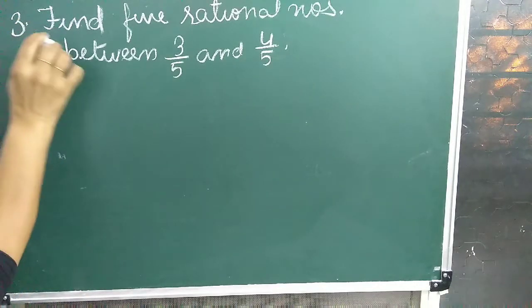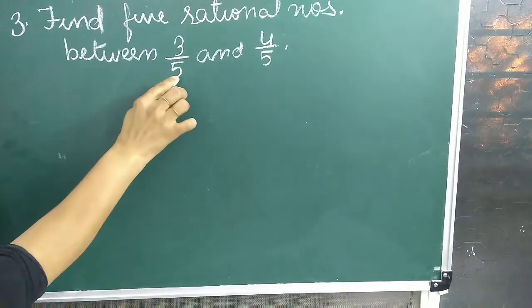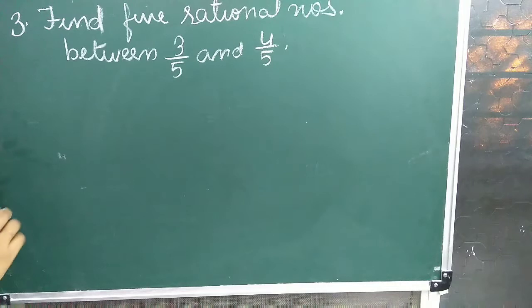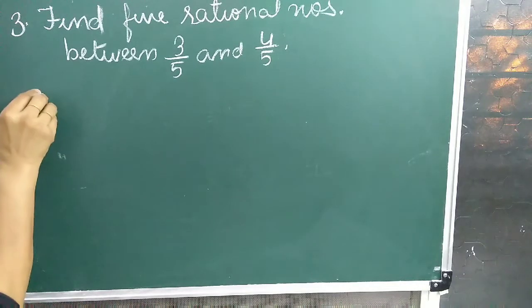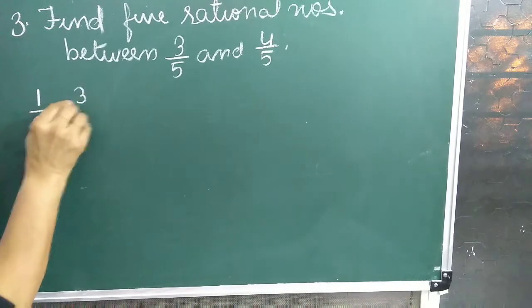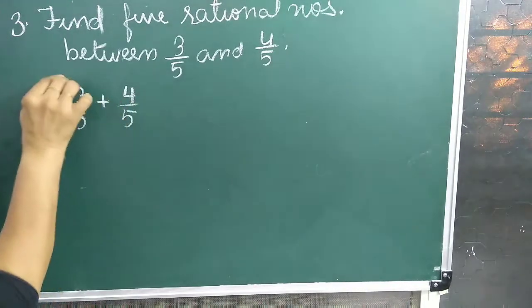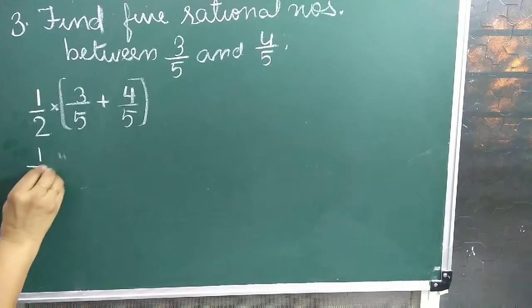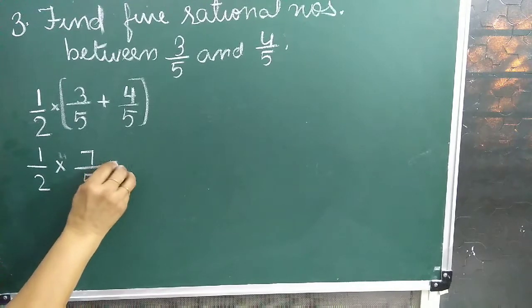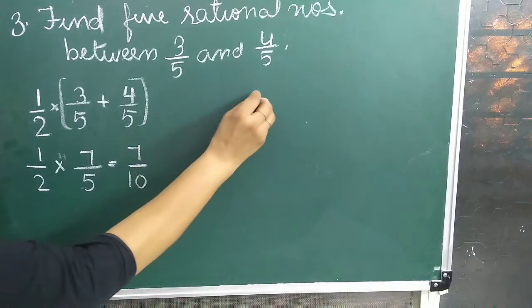Next, question number three: find five rational numbers between 3 upon 5 and 4 upon 5. We can do this question by the mean method. So the first number is 1 upon 2 into (3 upon 5 plus 4 upon 5), that is 1 upon 2 into 7 upon 5, which equals 7 upon 10.